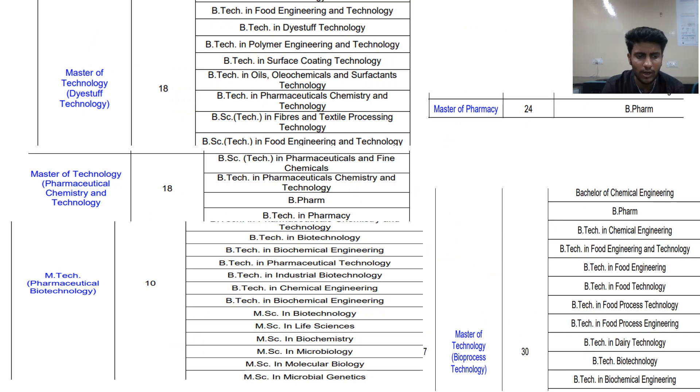If I talk about the ICT qualifications, mostly pharmacy programs. The first domain is Master of Technology in Dyestuff Technology - there are 18 seats and qualifications in these areas. B.Pharm students are also allowed to sit for this. Then Master of Technology in Pharmaceutical Chemistry and Technology - here you can see that B.Pharm is the qualification with 18 seats. Then M.Tech in Chemistry.